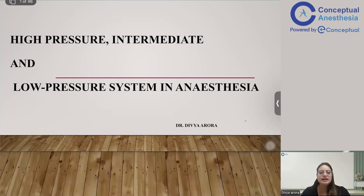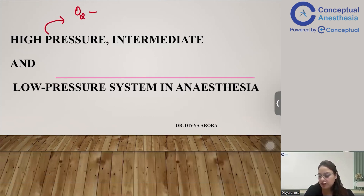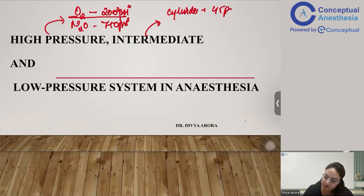We'll be discussing the high pressure system, intermediate, and the low pressure system. When we say high pressure, how high is it? The high pressure system includes oxygen at 2000 psi and nitrous at 750 psi. When we talk about intermediate pressure, for the cylinder it's around 45 psig, and for the pipeline it's around 55 to 60 psig.